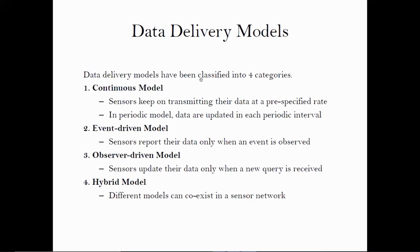There are four data delivery models for data acquisition: a continuous model, where sensors keep transmitting data at a pre-specified rate; a periodic model, where data is sent at periodic time intervals; an event-driven model, where sensors push data to the sink node whenever they detect an event; and an observer-driven (query-driven) model, where sensors update their data only when a query is received. Combinations of all these models can also coexist in the sensor network. Most applications use one of these: either continuously sending data, pushing data based on events, or replying whenever a query is received.